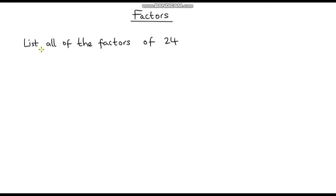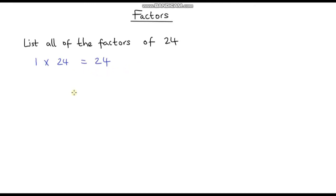So first of all let's list all of the factors of 24. What numbers divide into 24 without leaving a remainder? Now factors always come in pairs, so what two numbers can multiply together to get 24? Well if we start right at the bottom with the smallest number, 1 times 24 is 24. So we can say that 1 and 24 are both factors of 24.